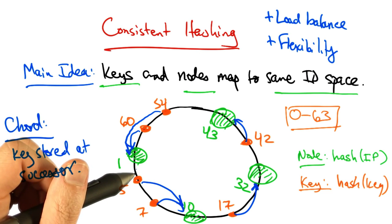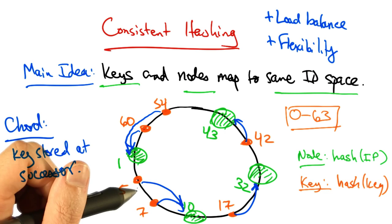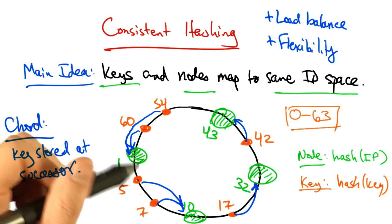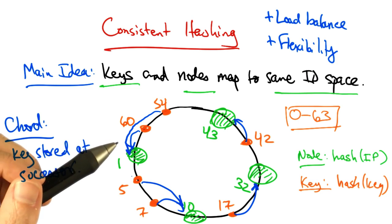You can actually prove that the solution is optimal, meaning the minimum number of keys need to be remapped to maintain load balance when a node joins or leaves the network.